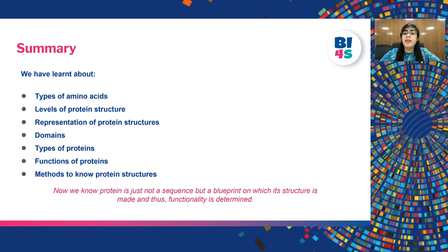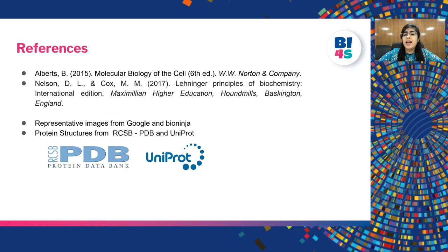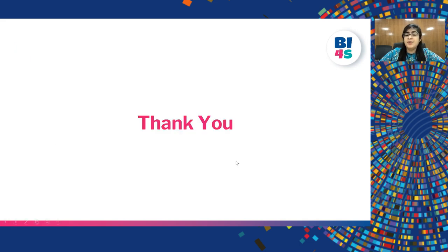Summarizing this lecture, we have learned about types of amino acids, levels of protein structure, representation of protein structures, domains, types of proteins, functions of proteins, and methods to determine protein structures. We now know that a protein is not just a sequence but a blueprint on which its structure is made and thus functionality is determined. The images and concepts in this lecture have been adapted from Bruce Alberts' Molecular Biology of the Cell, Lehninger Principles of Biochemistry, Google, BioNinja, PDB and UniProt. Thank you for your attention.